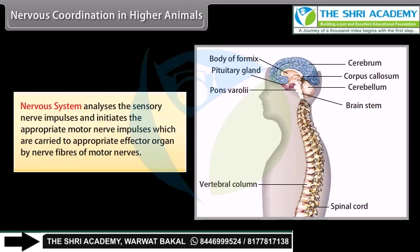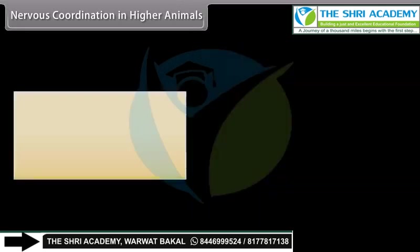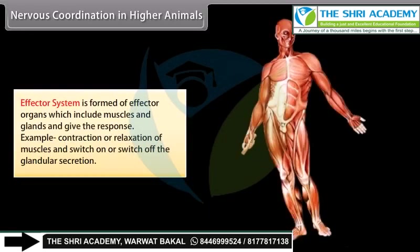The nervous system analyzes the sensory nerve impulses and initiates the appropriate motor nerve impulses, which are carried to the appropriate effector organ by nerve fibers of motor nerves. The effector system is formed of effector organs, which include muscles and glands, and gives the response — for example, contraction or relaxation of muscles, and switching on or off of glandular secretion.